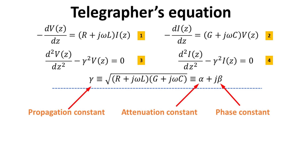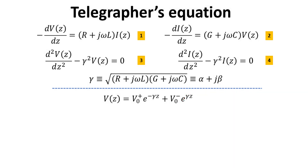Gamma, as defined, is called the propagation constant. It is complex in general, with the real and imaginary components denoted by alpha and beta respectively. Alpha is also called the attenuation constant, and beta the phase constant. Equation 3 is a simple second-order differential equation whose solutions are exponential functions with either positive or negative exponents as shown.